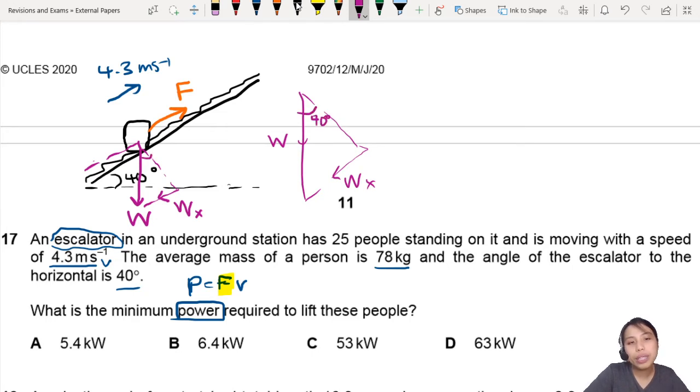Angle between the horizontal and the slope is also that angle there. So, this WX, really, you can express it as W opposite hypotenuse sine 40. W sine 40. So that would be the component which is equal to F, which is the engine, or what the engine is exerting.